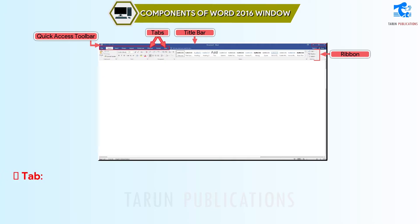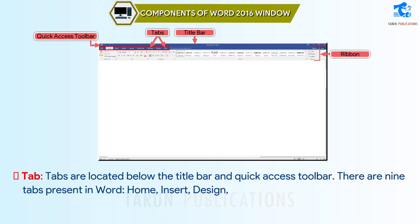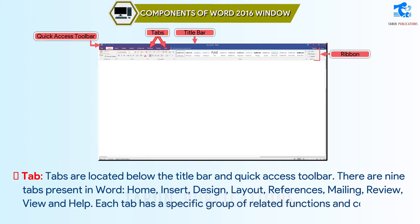Tab: tabs are located below the title bar and Quick Access Toolbar. There are nine tabs present in Word: Home, Insert, Design, Layout, References, Mailing, Review, View, and Help. Each tab has a specific group of related functions and commands which are used to complete the tasks.